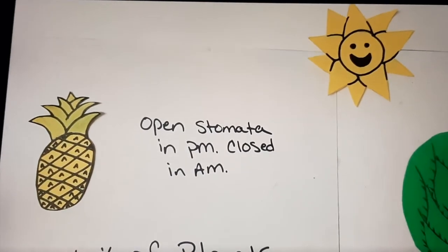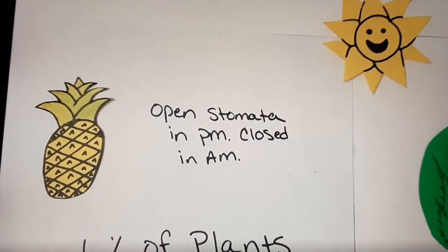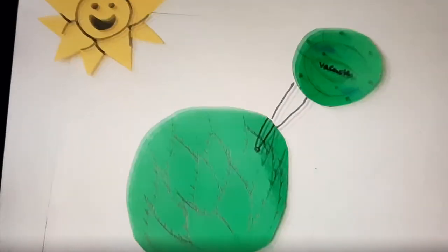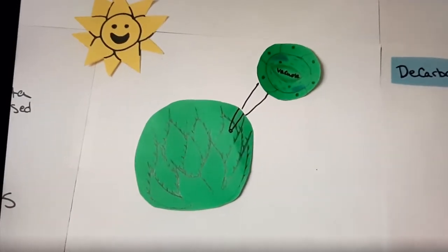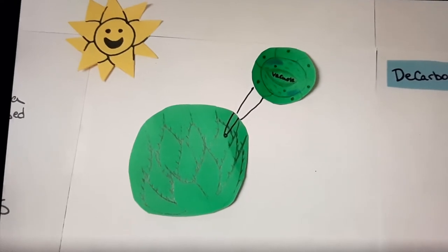They have an inverted stomata pattern. The stomata are open in the evening and early morning, allowing the PEP carboxylase to be active, but they are closed during daylight hours when organic acids are stored in their vacuoles.